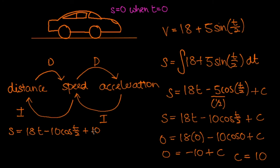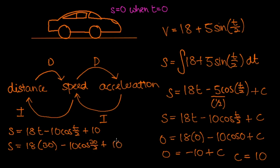If we wanted to find how far the car traveled after 30 seconds we plug in t equals 30: 18 times 30 minus 10 cosine 30 over 2 plus 10. It's important to remember that for trigonometry in calculus we always use radians. So this is cosine 15 in radians, and the result comes out as 558 meters to 3 significant figures.